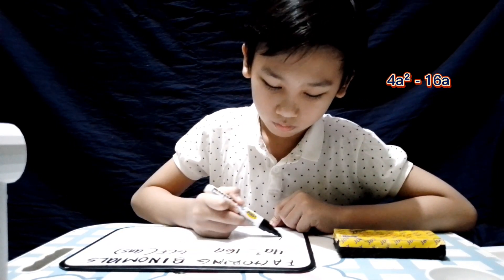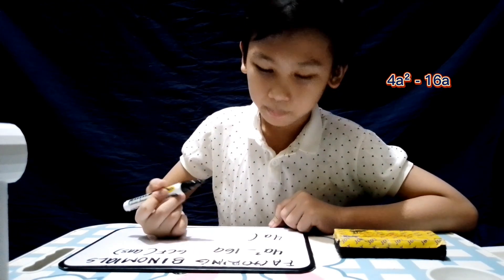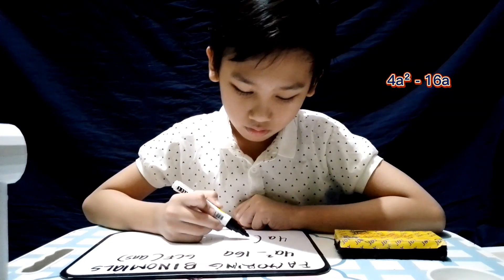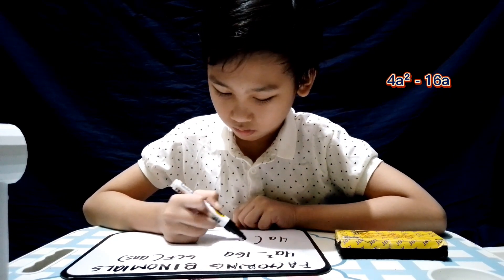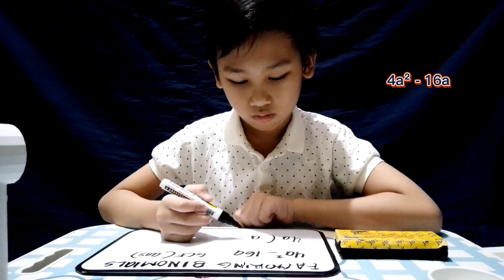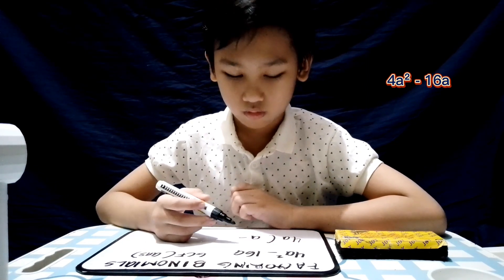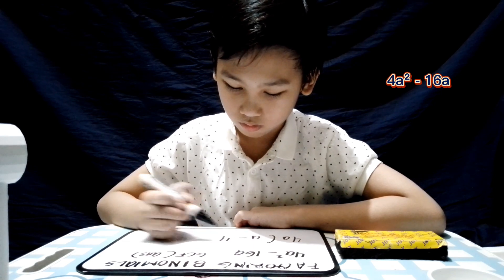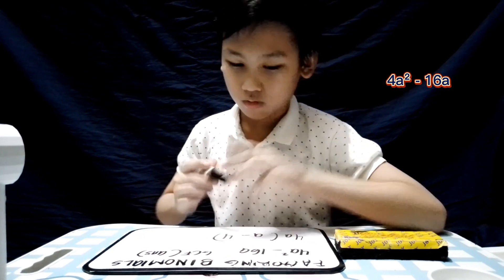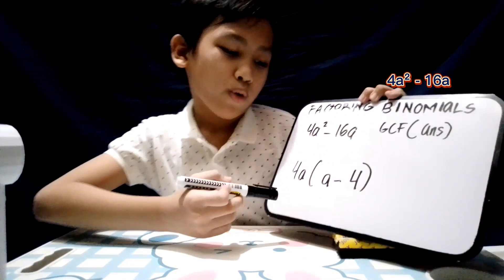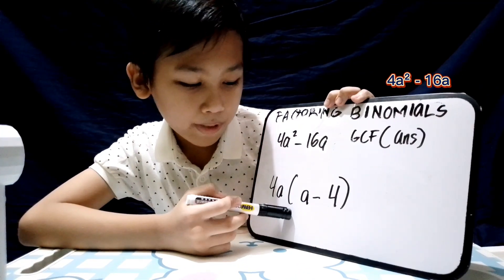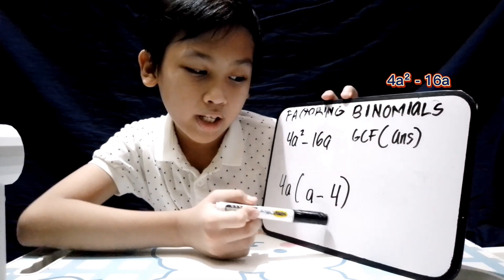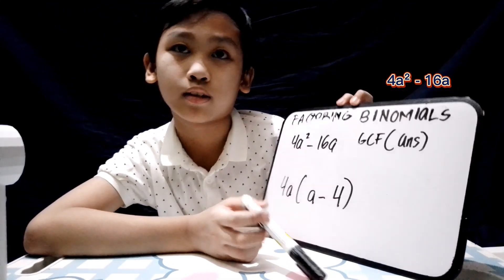Next: 4a squared minus 16a. What's your GCF? Both have the same variable. GCF is 4a. Very good. The answer is 4a times open parenthesis a minus 4, close parenthesis.